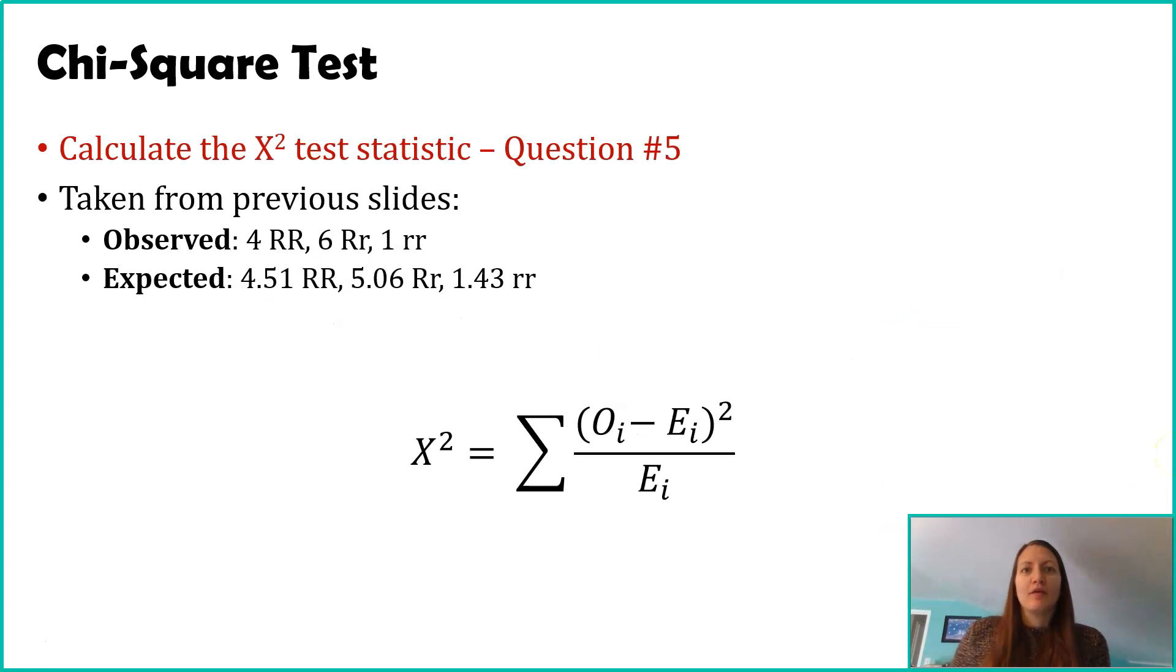Our next step, where we left off, was that we determined what the expected number of snails were of our three different genotypes using that Hardy-Weinberg principle of equilibrium equation.